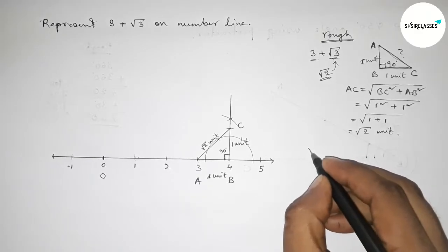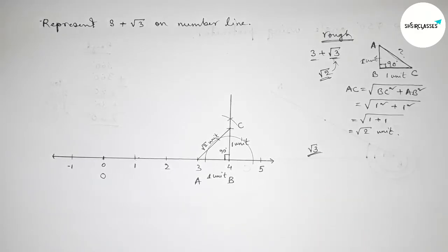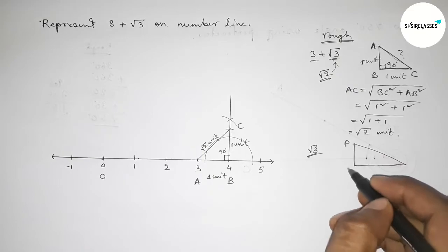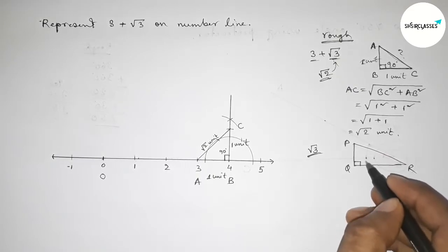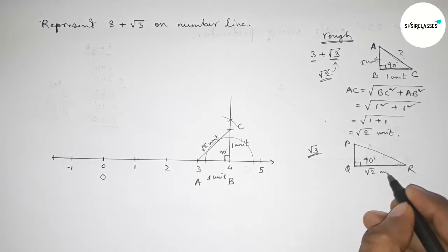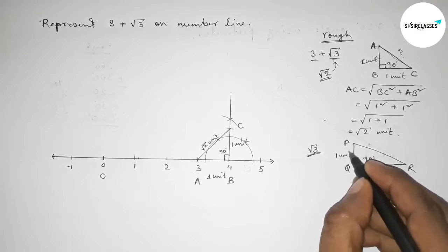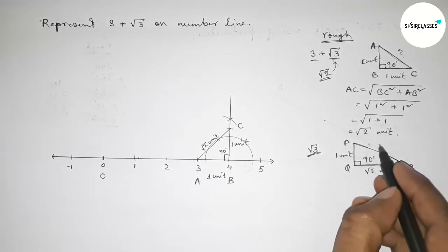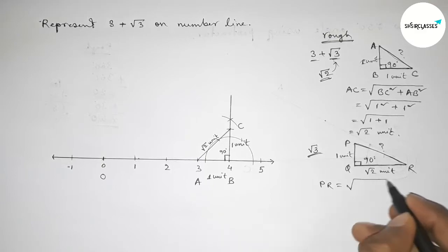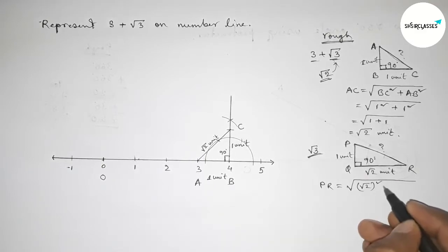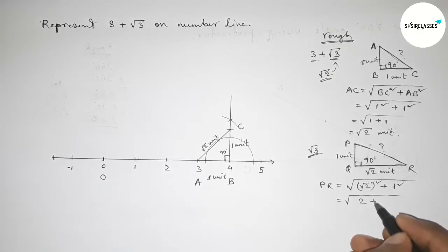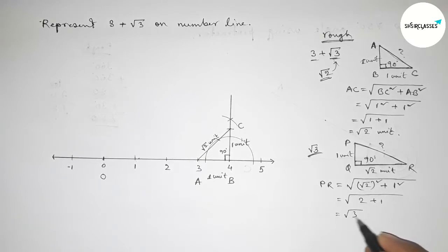Now for root 3: roughly drawing a right angle triangle PQR with 90 degrees. Taking base equal to root 2 units and perpendicular equal to 1 unit. By Pythagoras theorem, hypotenuse = root of ((root 2)² + 1²) = root of (2 + 1) = root 3 units.